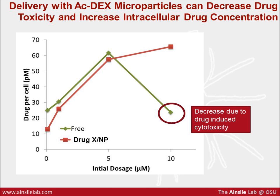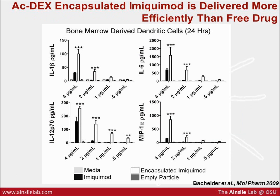We've also shown that encapsulation in ac-dex can significantly reduce drug cytotoxicity and increase drug intracellular loading. These are macrophages treated with either free drug or drug encapsulated in our particles. This is a proprietary drug, which is why it's referred to only as 'drug.' The free drug itself is toxic around 5 micromolar, but we can load it up beyond 10 micromolar with our encapsulated drug. The sharp decrease with free drug is because the cells are dying at 5 micromolar. We're able to increase drug loading and decrease cytotoxicity, which translates into more efficient delivery — partly due to the acid sensitivity and intracellular release of our polymer.